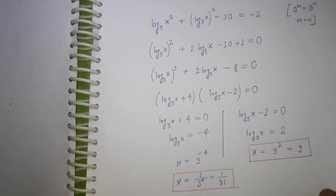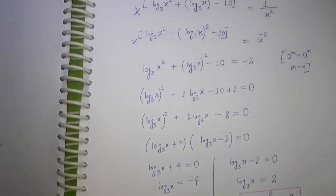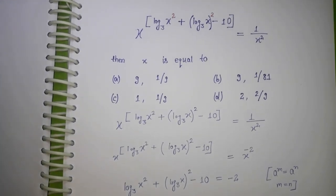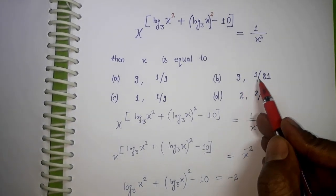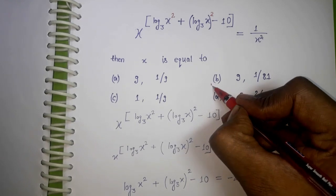So we have 9 and 1/81, which means option (b) 9, 1/81 is our correct answer.